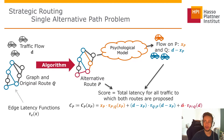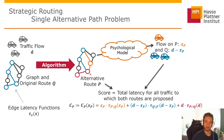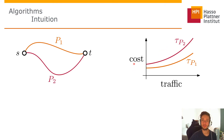We already see a cyclic dependency here. By calculating the alternative route we must keep in mind it should be optimal with respect to this cost function, but we can only find out how many people will use the alternative after calculating it and putting it into the psychological model. Consider two alternatives P1 and P2 with their cost functions — no matter the traffic, traversing P2 is always more cost intensive.